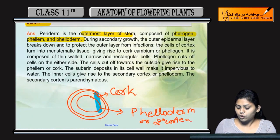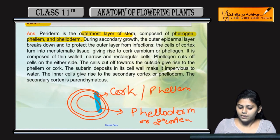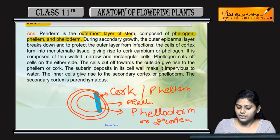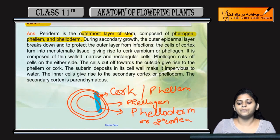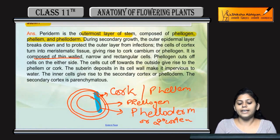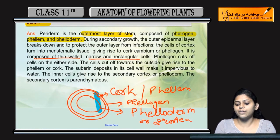What do we call the outer layer? It is called phelome or cork. The central layer is called phelogen, which gives rise to cork and phelloderm. Phelogen is composed of thin-walled, narrow and rectangular cells.